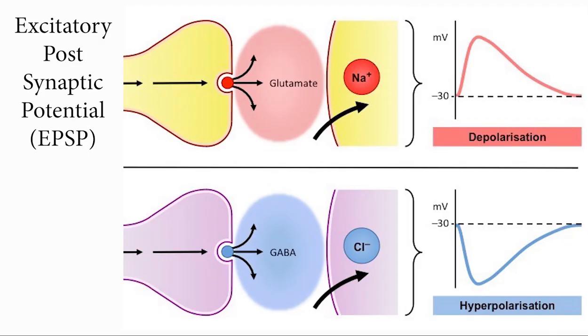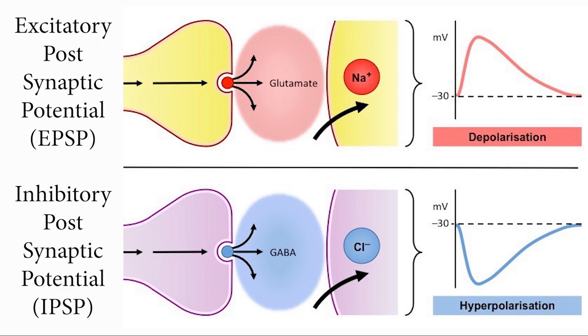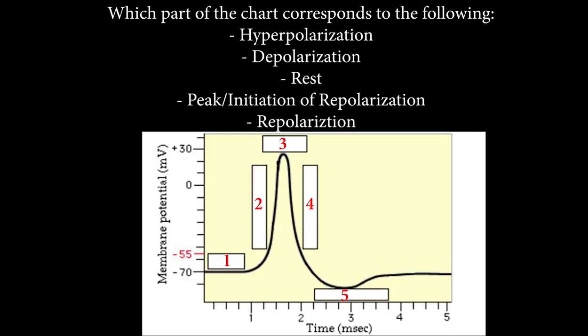Once the neurotransmitter is in the synaptic cleft, neurotransmitters bind to receptors on the postsynaptic neuron, and one of two things can happen: an excitatory postsynaptic potential or an inhibitory postsynaptic potential. We covered a lot! Let's take a look at a few questions. Which part of the chart corresponds to hyperpolarization, depolarization, rest, peak or initiation of repolarization, and repolarization?